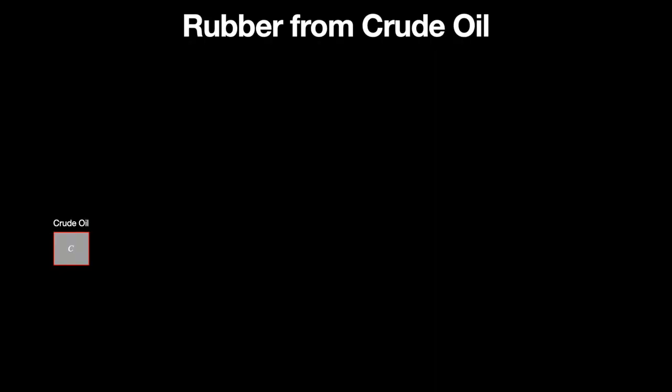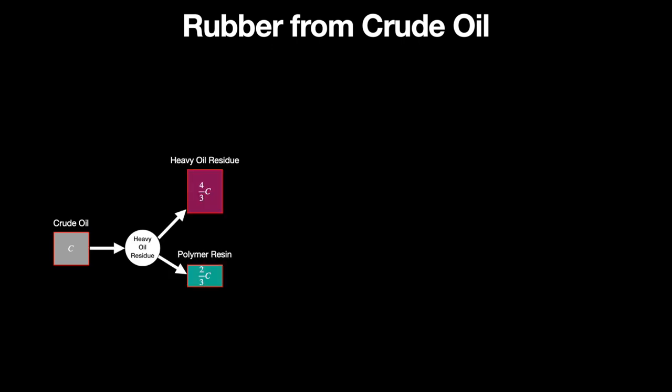Let's take a look at the rubber production using this loop. I'm starting with that because it's slightly easier to explain than the plastic one. Let's assume we have some amount of crude oil which I noted with C. That is all sent to the heavy oil residue refineries, which return 4/3 C heavy oil residue and 2/3 C polymer resin. The polymer resin is sent together with equal amounts of water to refineries that produce 1/3 C rubber with the residual rubber recipe.